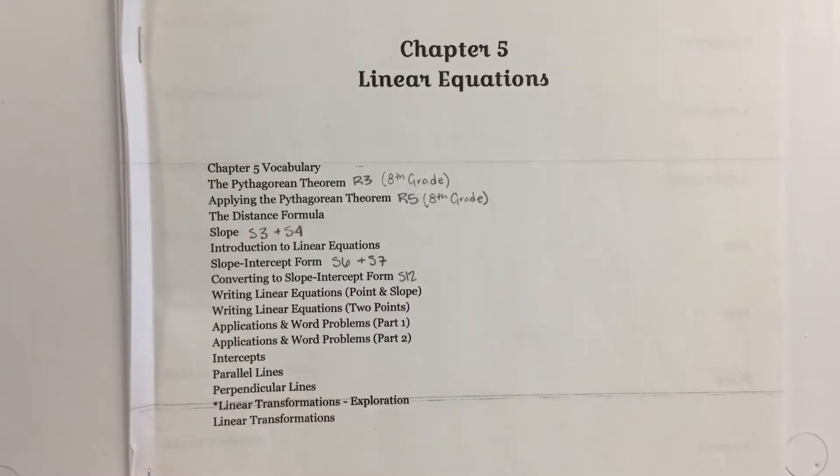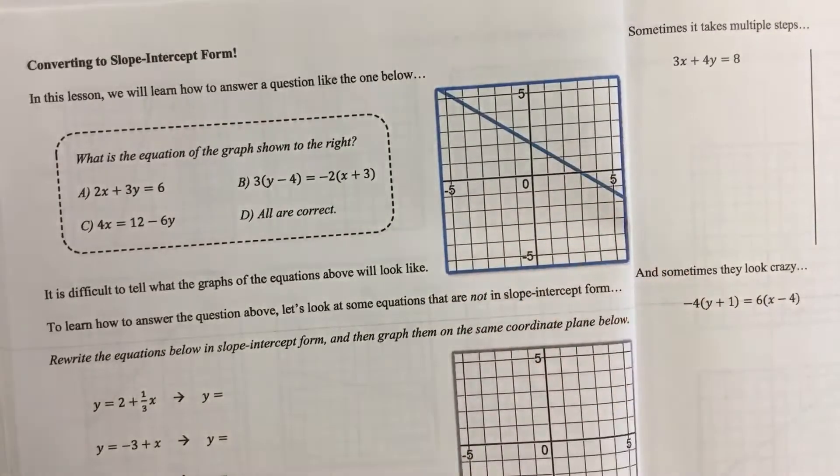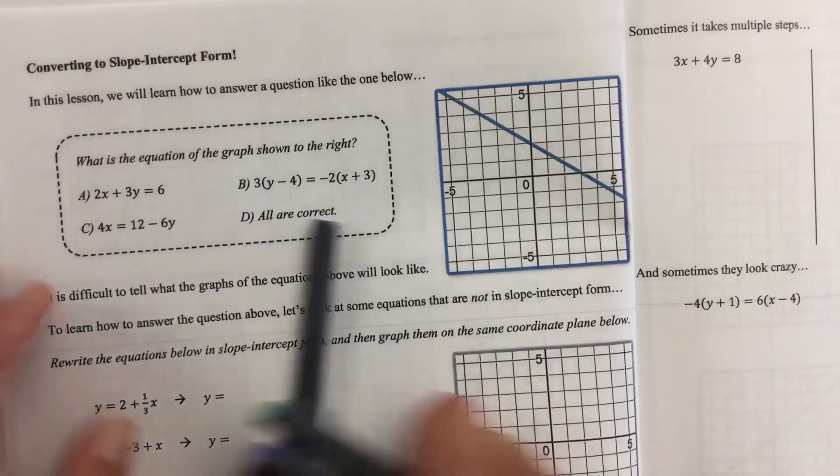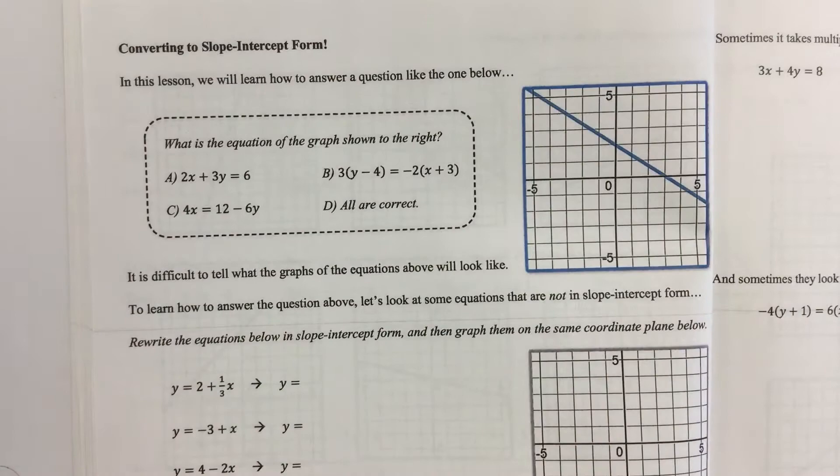Okay, algebra 1, we are going to do converting to slope-intercept form. So this is one of my favorite forms, but sometimes the equation of the line is not in that form. So we're going to talk about how to get it there.